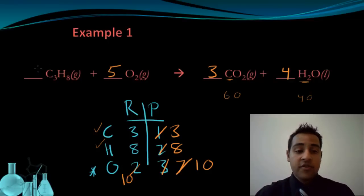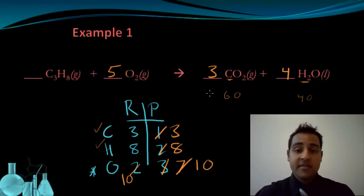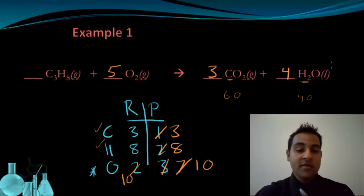The coefficients are one, five, three, and four, so I know that they are in the lowest whole numbers possible and that this is a correctly balanced equation. The key to balancing this example was recognizing that oxygen shows up twice on a single side of the reaction, so that was going to be the one that was balanced last.